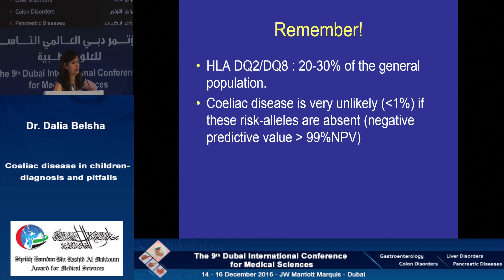As a reminder, 20 to 30% of the general population carry HLA-DQ2 or DQ8 — but if you test negative, the negative predictive value for having the gene is more than 99%, meaning you are not going to develop celiac disease.